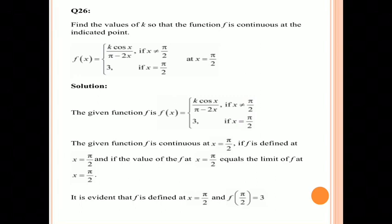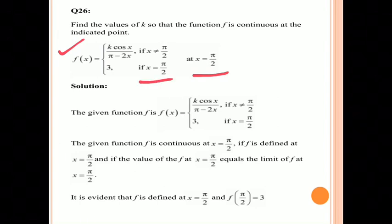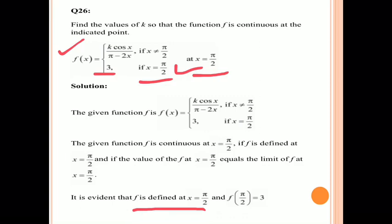Question number 26: find the value of k so that the function f is continuous at the indicated point x = π/2. The function is defined as f(x) = k·cos x / (π − 2x) if x ≠ π/2, and f(x) = 3 if x = π/2. So f(π/2) = 3.